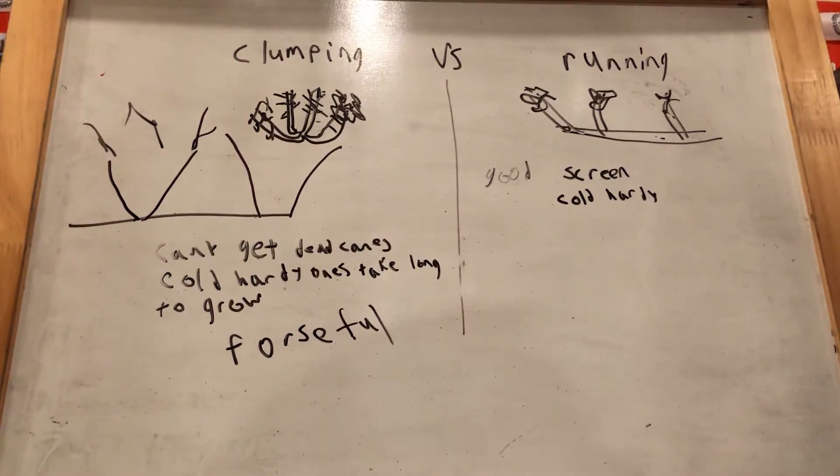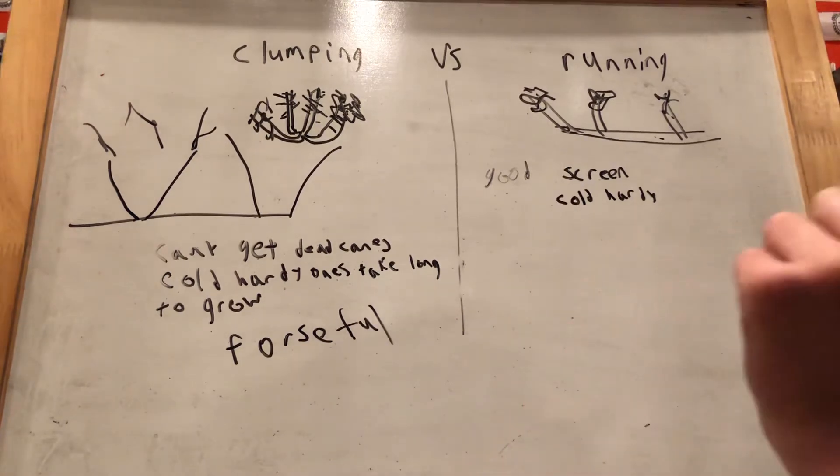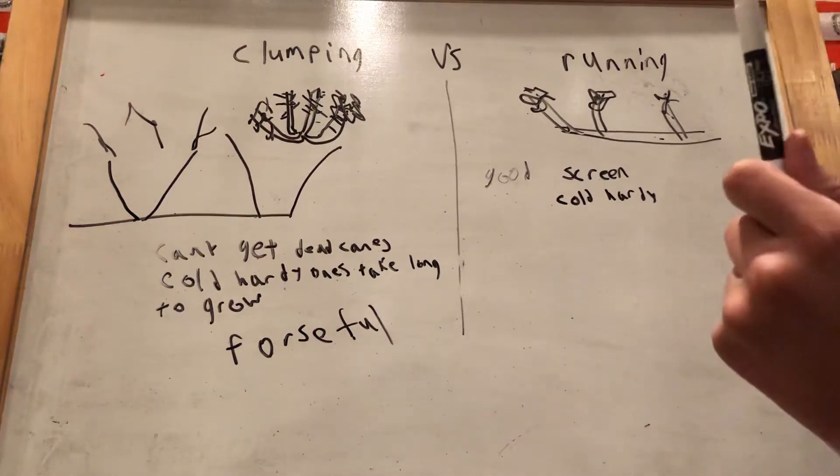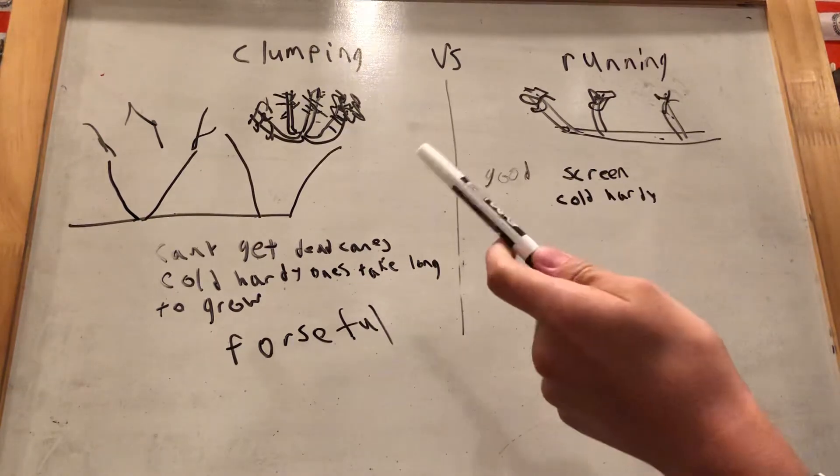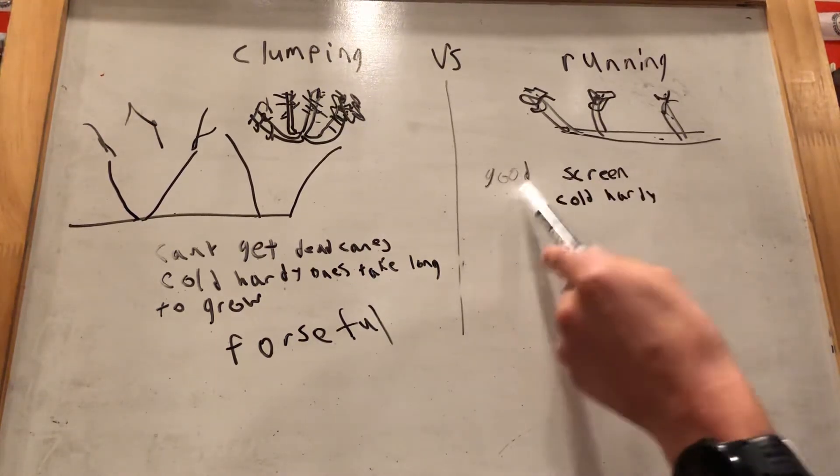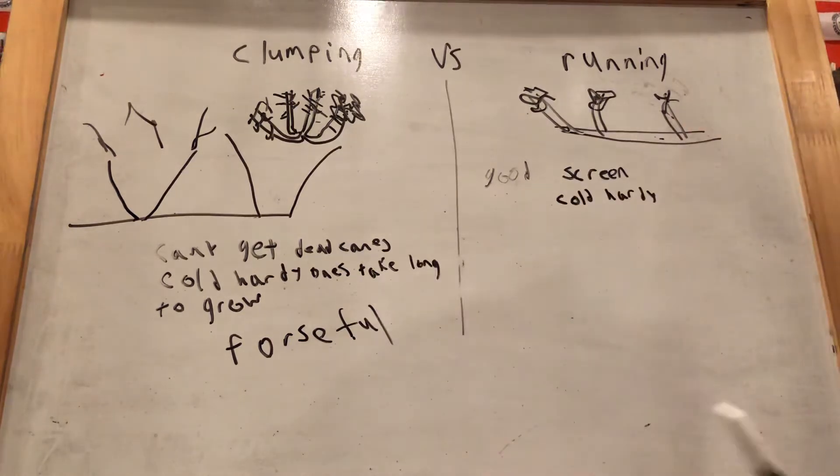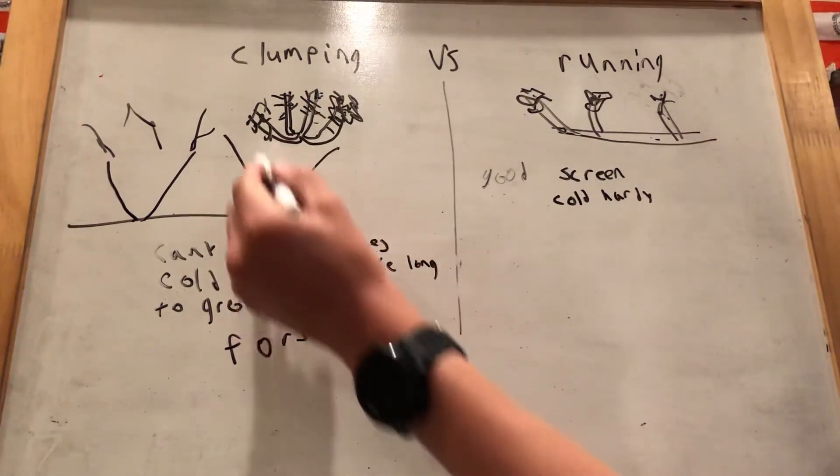Welcome back to the bamboo series. This is the difference between clumping bamboo and running bamboo. Running bamboo is good for screening, while clumping bamboo grows differently.